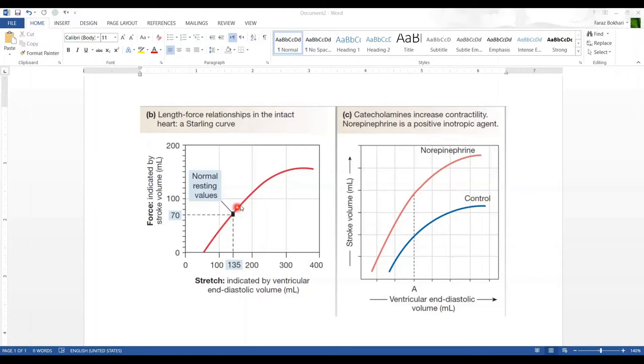This is the normal resting value. Above this is when you exercise - the venous return is more, the EDV is more, the stretch is more, and when it's more, the corresponding force of contraction and stroke volume is more.